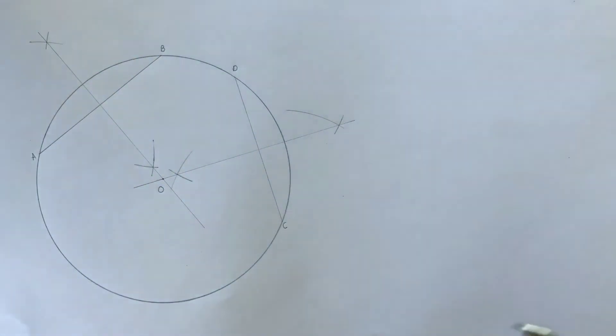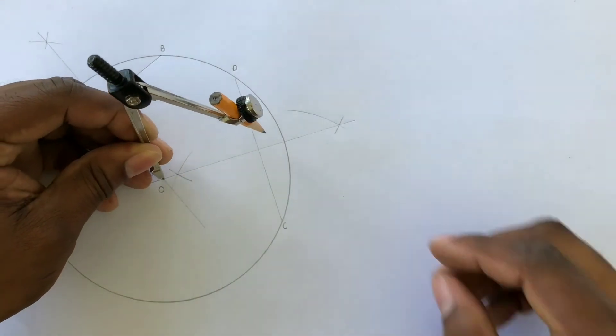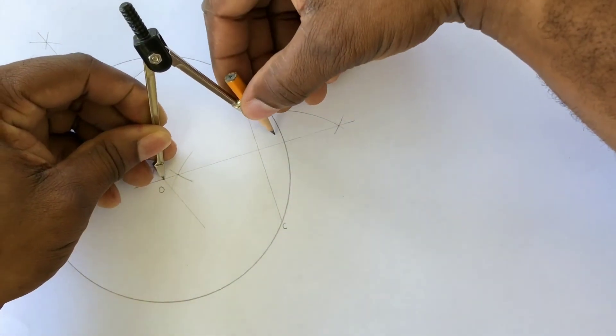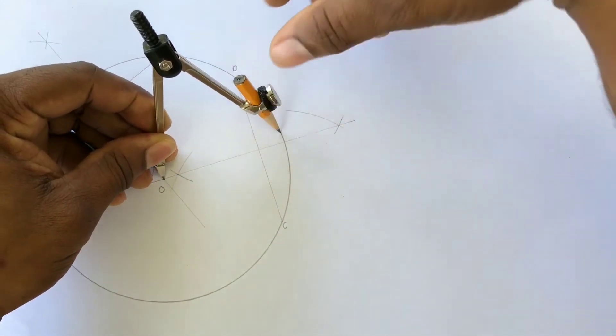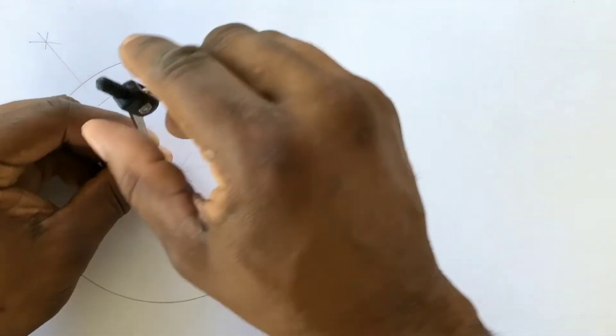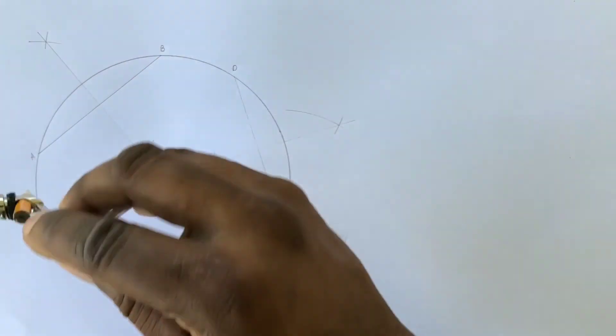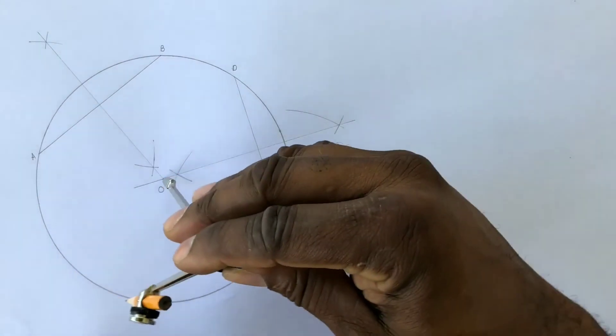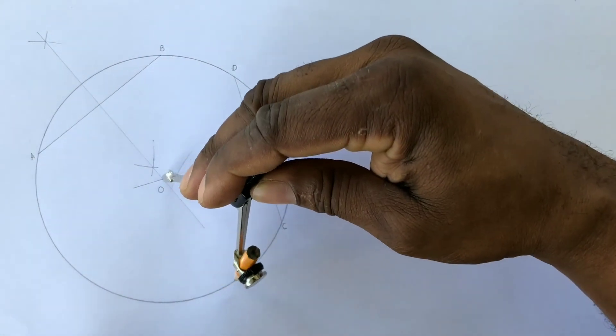Now when you open your compass from the center O, your compass will now touch the circumference of the circle at all points. This is now proving to you that you have just found the center of your circle.